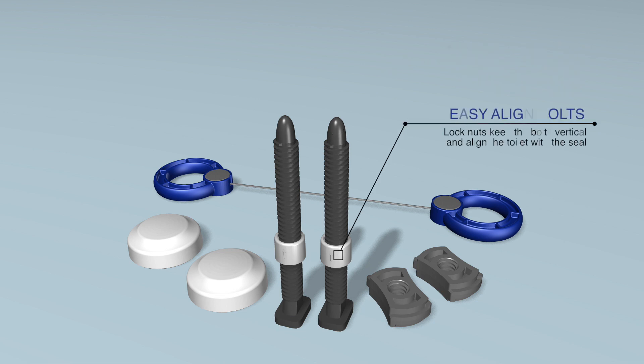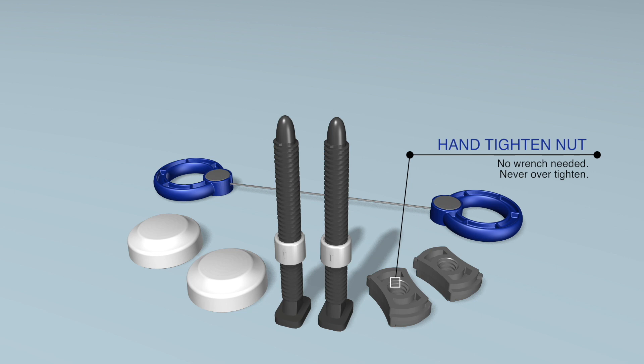Lock nuts keep the bolts vertical and align the toilet with the seal. Nuts are hand-tightened, eliminating the need for a wrench and preventing over-tightening.